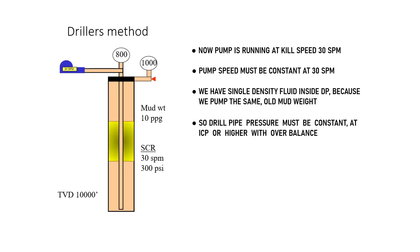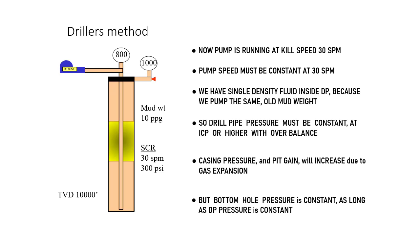We can apply small overbalance pressure above ICP to prevent secondary influx if necessary. When the influx is moving up in the annulus, casing pressure and pit gain will increase due to gas expansion. But as long as we maintain drill pipe pressure constant, then the bottom hole pressure will be constant.